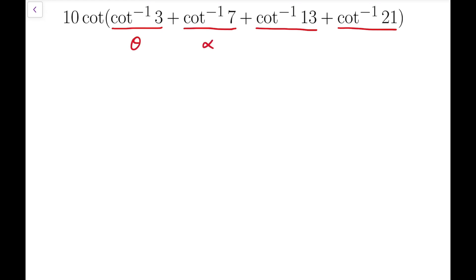So you can treat them something like theta, alpha, beta, gamma, etc. Those kind of traditional variables that are used for angles.